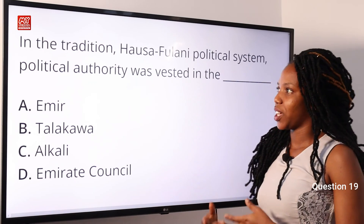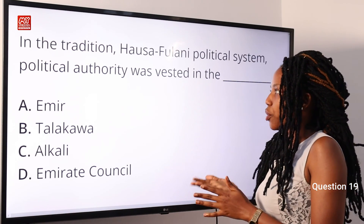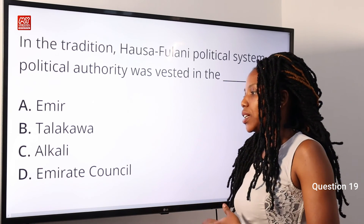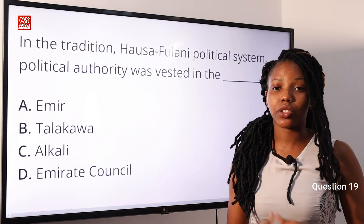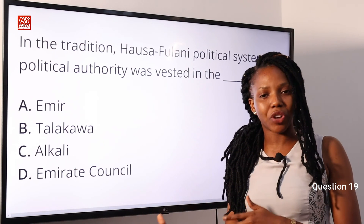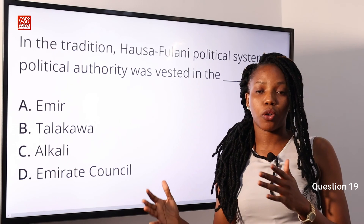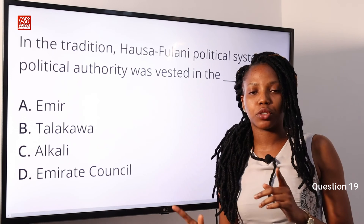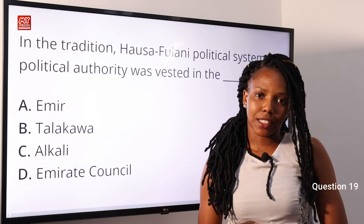Question 19: In the traditional Hausa-Fulani political system, political authority was vested in — A: the Emir; B: the Talakawa; C: the Al-Kali; D: the Emirates Council. The answer is A — the Emir. Caliphates were divided into emirates (territories), and each territory was headed by an Emir. The Hausa-Fulani political system was highly centralized. Option A is the correct answer.